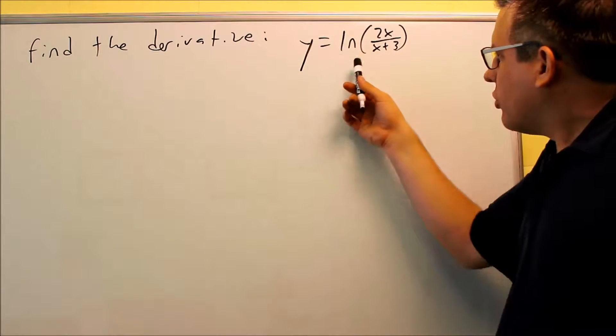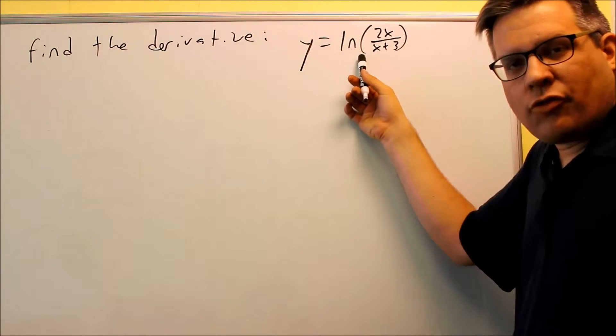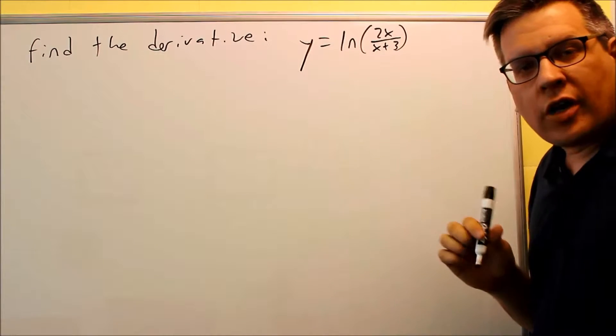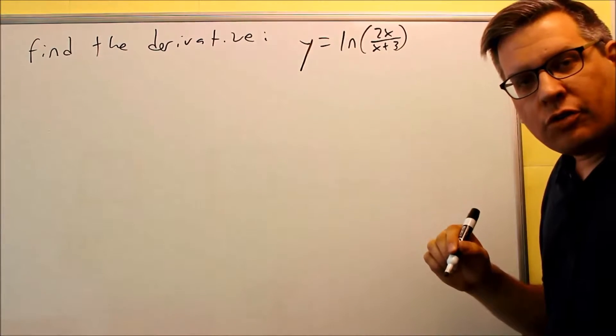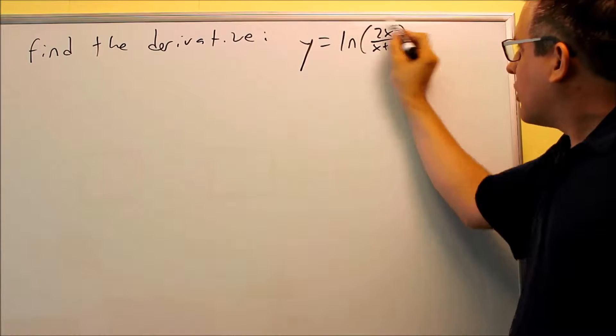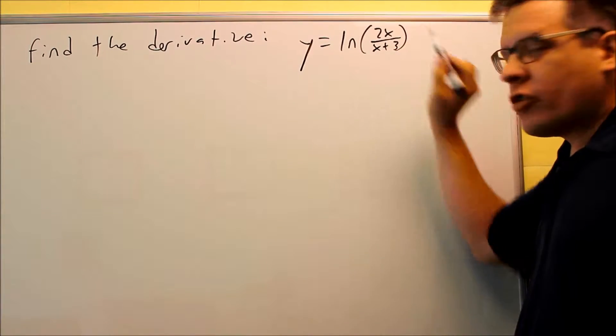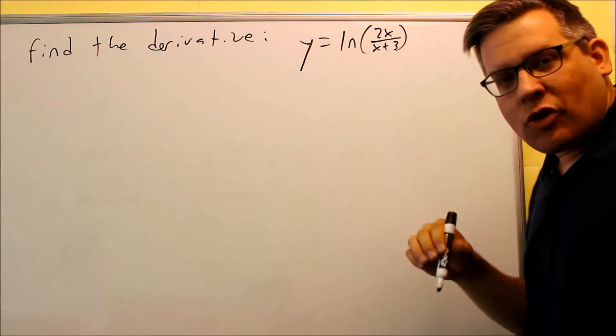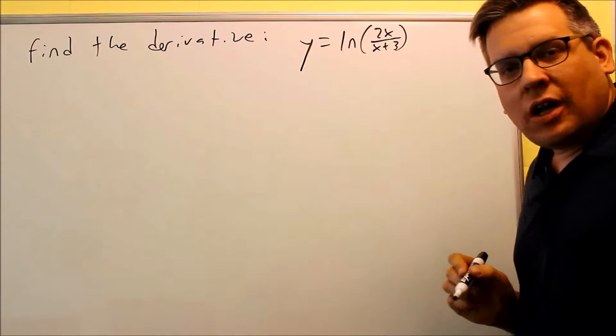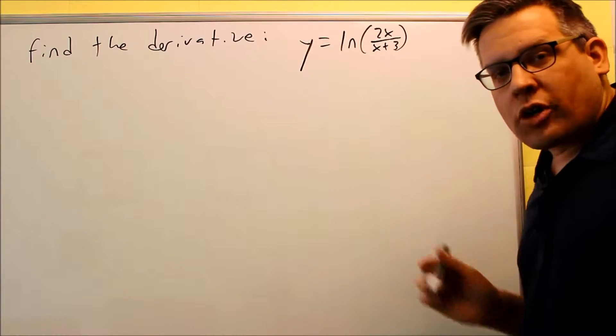So for this problem, if you wanted to do the derivative formula for ln, normally that requires us to do u-prime over u. So then we'd have to take the derivative of this over itself, of a fraction over a fraction. You'd have to do a quotient rule for that. That's going to be more complicated.